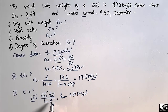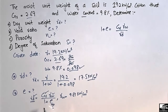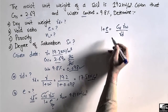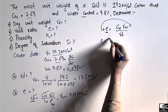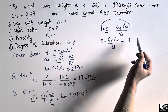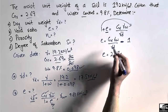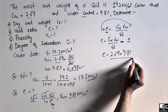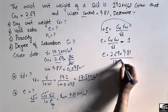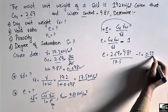Rearranging the equation: shift (1 + e) to the left and γd to the right, giving 1 + e = (Gs × γw) / γd. Then e = (Gs × γw / γd) − 1. Substituting: e = (2.69 × 9.81) / 17.5 − 1 = 0.51. So the void ratio of the soil sample is 0.51.